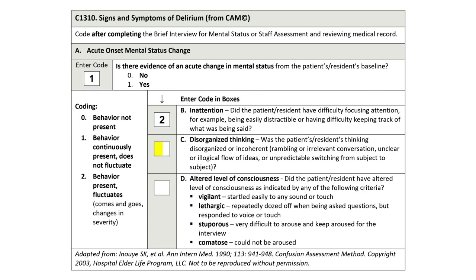What is the correct code for C-1310C – Disorganized Thinking for Mr. Miller? The options are: 0 – Behavior Not Present; 1 – Behavior Continuously Present, Does Not Fluctuate; 2 – Behavior Present, Fluctuates, comes and goes, changes in severity. The correct code for C-1310C – Disorganized Thinking would be 2, Behavior Present, Fluctuates. Mr. Miller demonstrated disorganized thinking, irrelevant conversation, and switching from subject to subject. Based on his wife's report, these behaviors are new and represent a change from baseline.